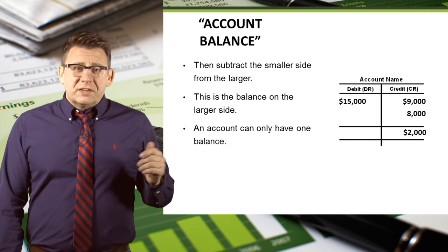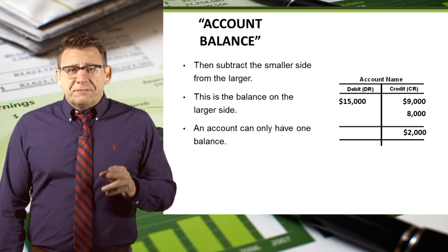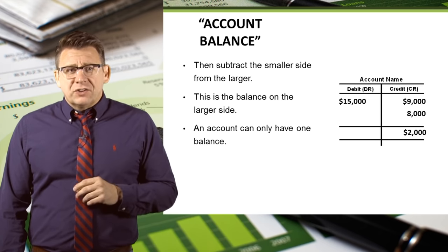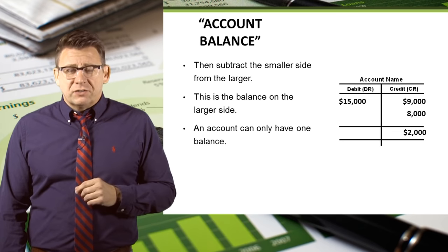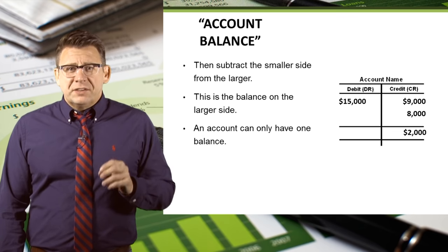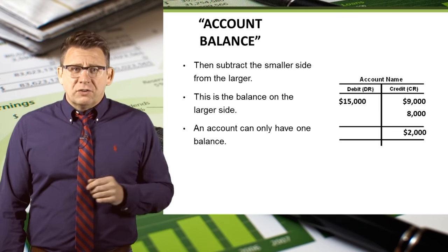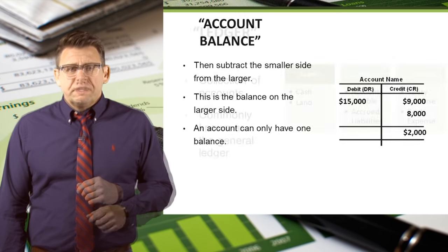In this next example, debits are $15,000 and credits are $17,000, so the balance of this account is a $2,000 credit balance.